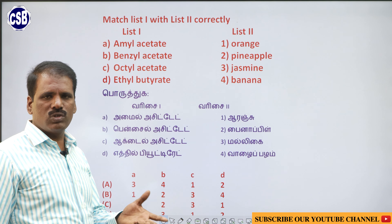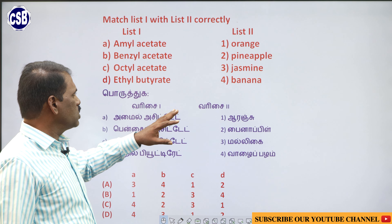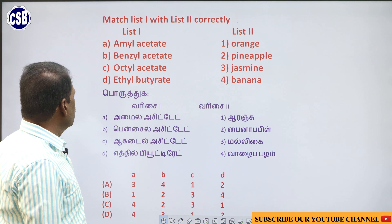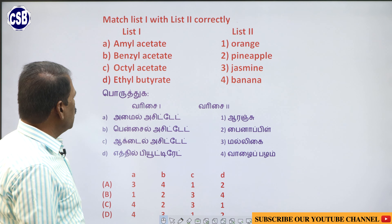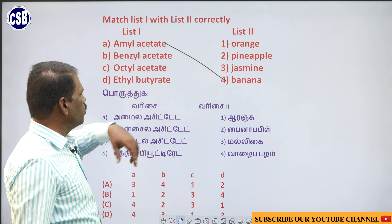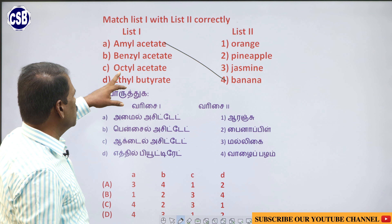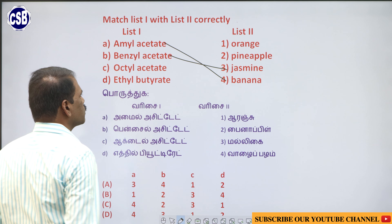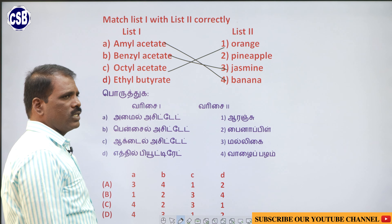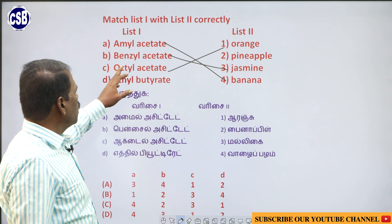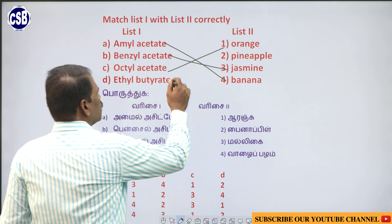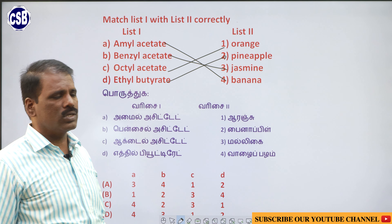Which of the following is correctly matched? A list of concepts — pH value, acid battery, germanium — and scientists — Sorensen, Faraday, Arrhenius — are given. We discussed that the pH scale was introduced by Sorensen, so that is correct. The concept of acid was given by Arrhenius, so that pairing is not correctly matched here. Battery is related to Faraday, and germanium is a semiconductor, not a conductor. The correctly matched answer is A: pH scale introduced by Sorensen.